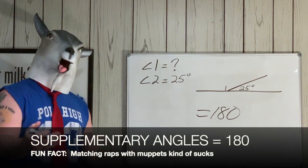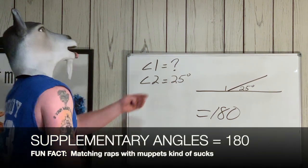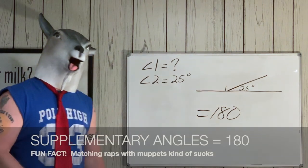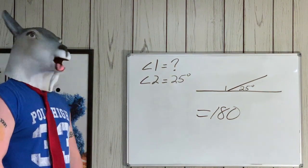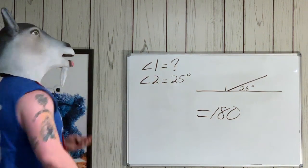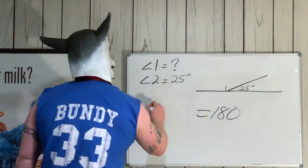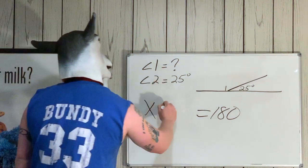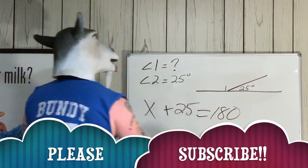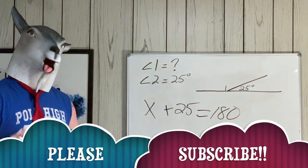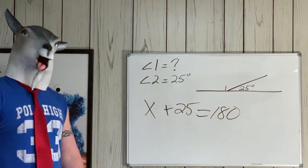Same thing we did before with the complementary. Now we know angle one plus 25 is going to equal 180. When we don't know something, boom, we go straight to the X. So we got X plus 25 equals 180. How simple is that?